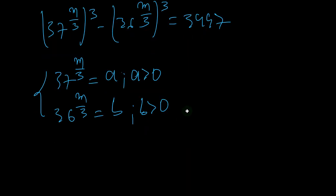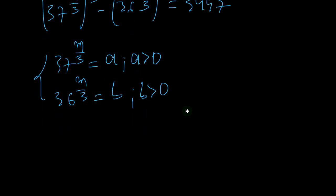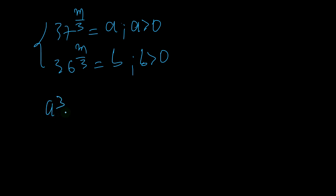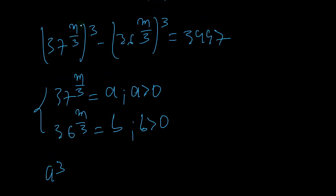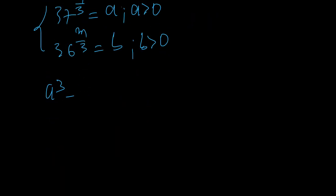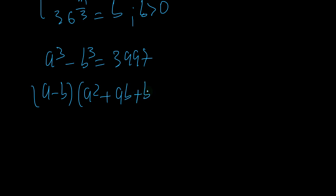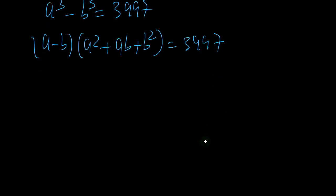Now let's replace. We're going to have a cubed minus b cubed equals 3997. This is a difference of cubes, so we can write this as (a minus b) times (a squared plus ab plus b squared) equals 3997.